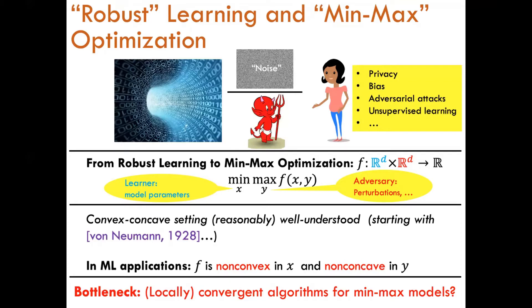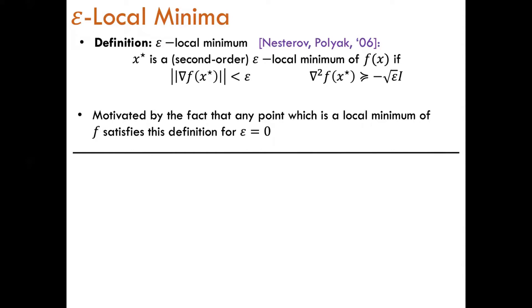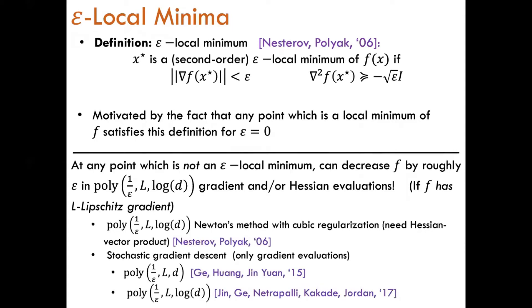However, it's not even clear how to extend the notion of local optimum to the setting of min-max optimization. Considering again the problem of local minimization: we say a point x is an epsilon local minimum of f if the gradient of f at x has magnitude less than epsilon, and all the Hessian's eigenvalues are greater than minus root epsilon. The motivation for this definition is that at any exact local minimum of f, the gradient of f is zero and the Hessian is positive semi-definite. It turns out that at any point which is not an epsilon local minimum, there are algorithms which can decrease the value of f by roughly epsilon in a number of steps which is polynomial in 1 over epsilon and polylogarithmic in the dimension d.